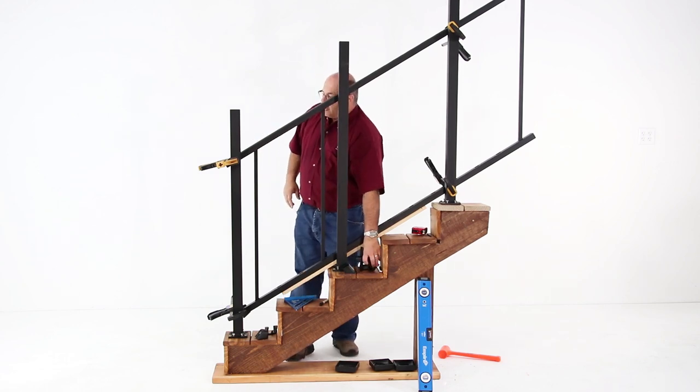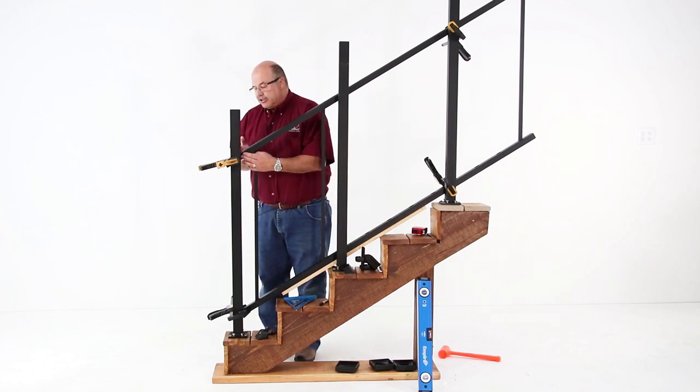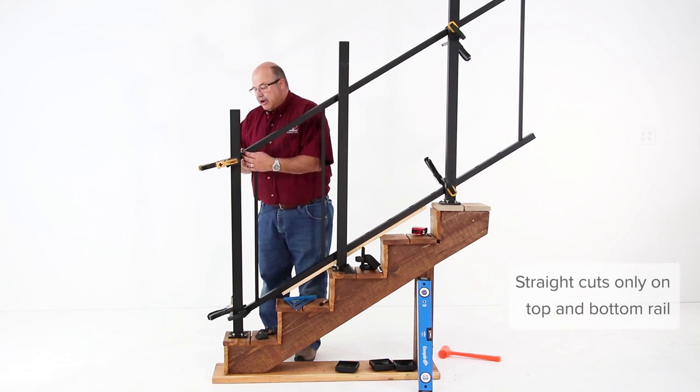From this apparatus, after the hardware's installed, we can determine how we're going to cut these rails. On the bottom side, top and bottom rail, you're going to mark 3/16ths off the plane of the top and bottom rail.